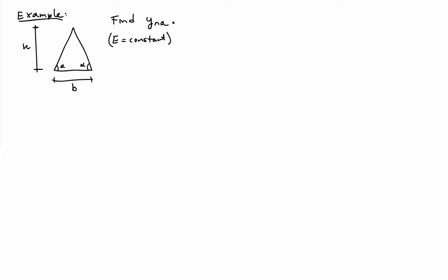As an example application of determining the neutral axis for a beam, let's consider a beam with a triangular cross-section. So it has height h and base b, and the sides are sloped at an angle alpha. And we'll assume that E is equal to constant.